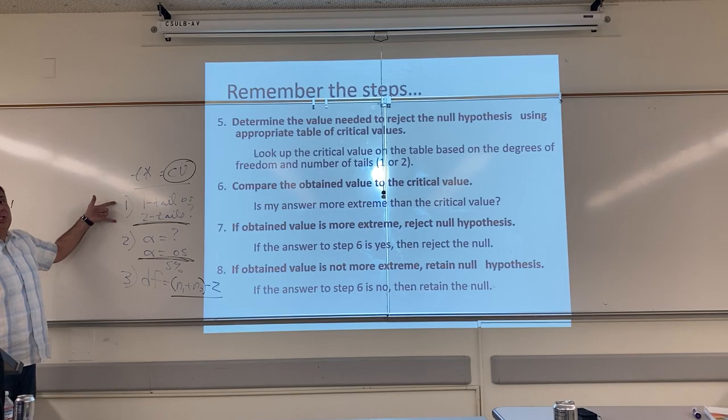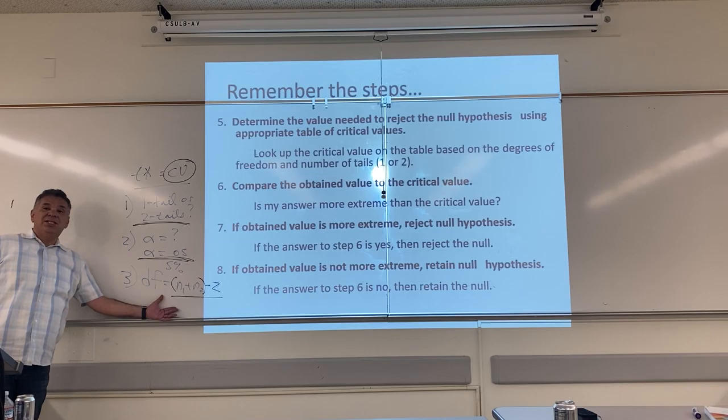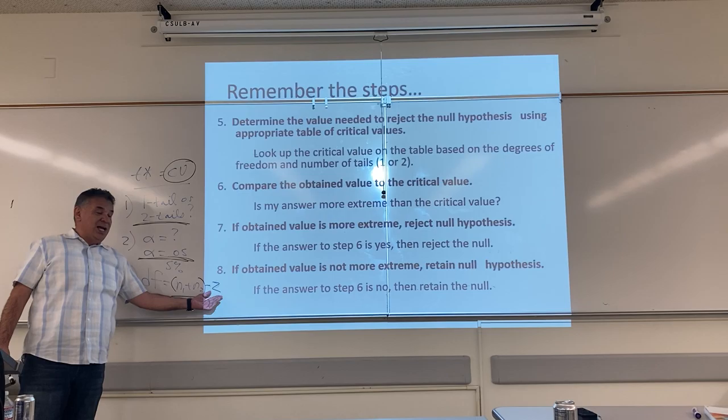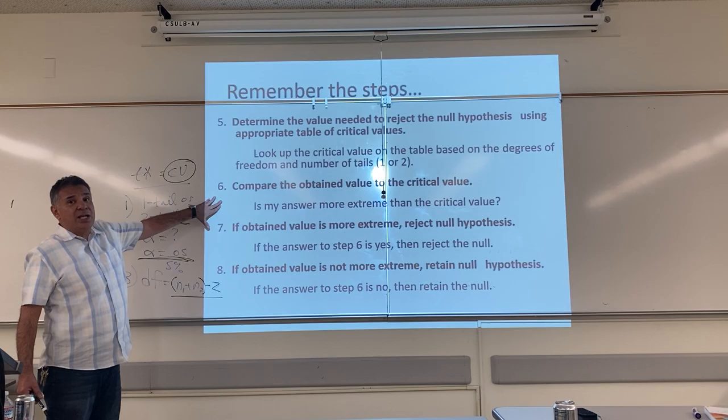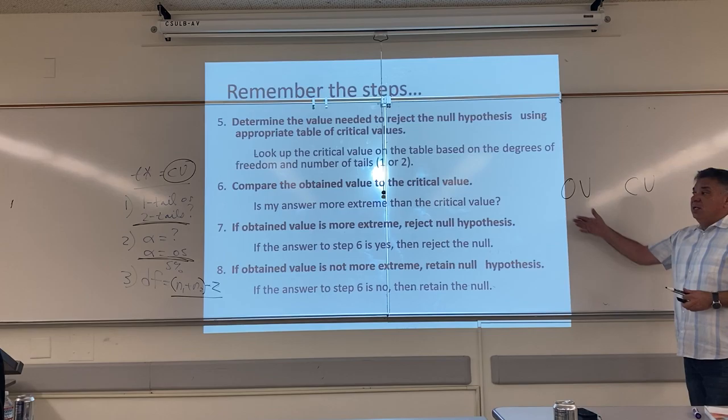Step five: determine the value needed to reject the null hypothesis using the appropriate table of critical values — look up the CV. To do that, you need to answer three questions: Is it a one-tail or two-tail test? What is the size of alpha — until further notice, five percent? And what are my degrees of freedom? This comes from the test formula — it's the total sample size minus the number of groups.